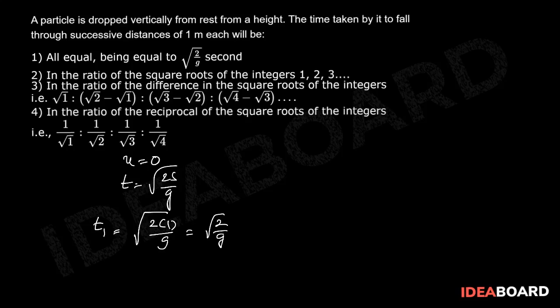And time to travel next 1 meter, t2 equals square root of 2 into 2 divided by g minus square root of 2 by g. That is root 2 by g common, which equals root 2 minus 1.